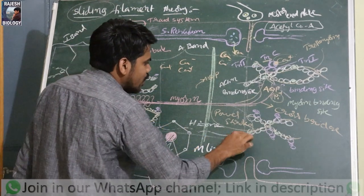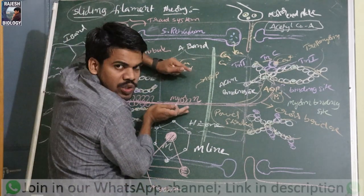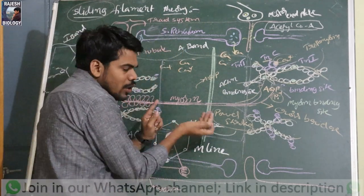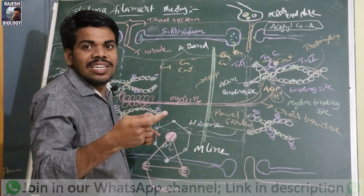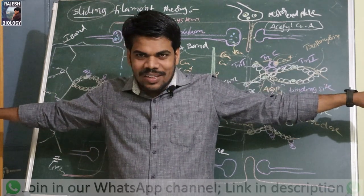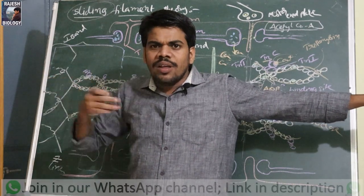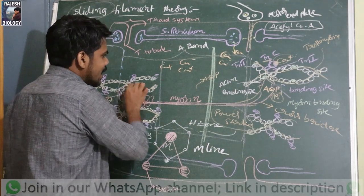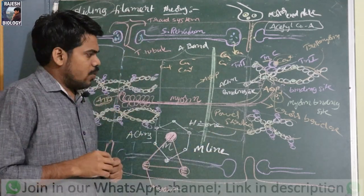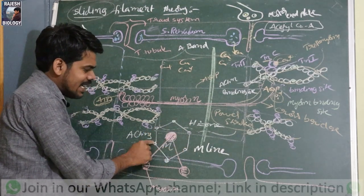The thin portion of the thick band (A-band) is known as the H-zone. During muscle contraction, the H-zone gradually decreases and finally disappears. So: I-band decreases, H-zone decreases, but overlapping zone increases. The A-band remains constant throughout, because actin filaments slide over the myosin — myosin does not enter into the actin. So the A-band (myosin band) remains constant. That is another important exam point.